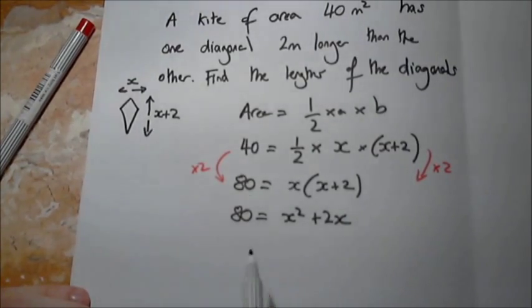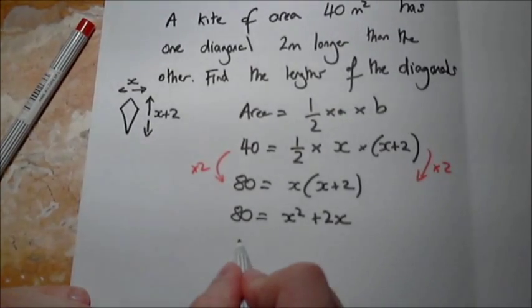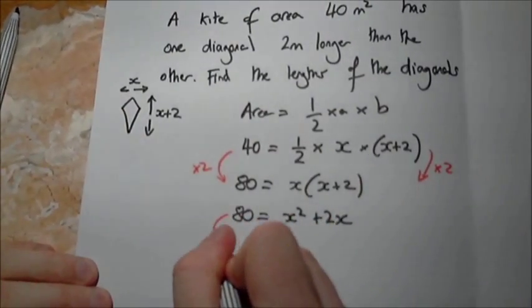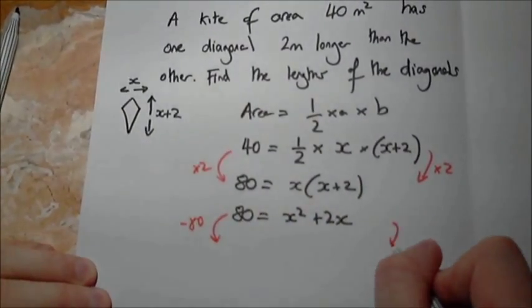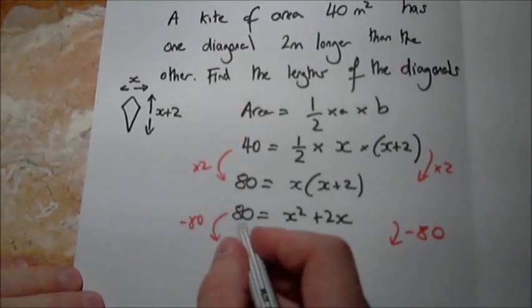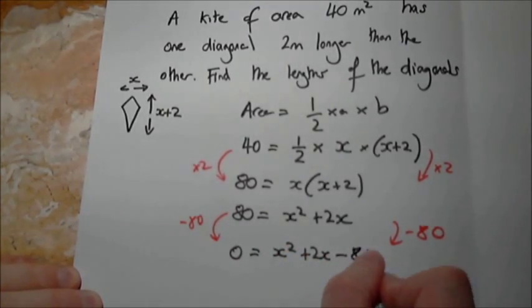Now what can we do? If we have a look closely now, we've got a quadratic equation. If we get it to zero, then we may be able to factorize. So zero, let's minus 80 from both sides. So 80 minus 80 is zero equals x squared plus two x minus 80.